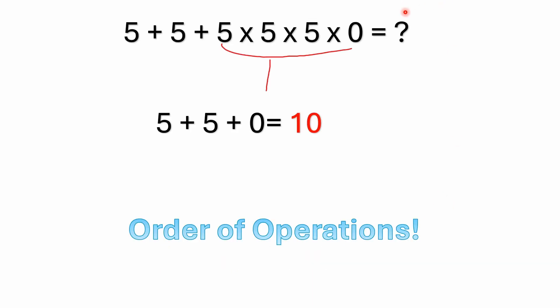A lot of you have probably caught this already, but when you look at this 5 times 5 times 5 times 0 in the problem, you realize that anything multiplied by 0 is going to be 0. So this whole section here basically just becomes 0.